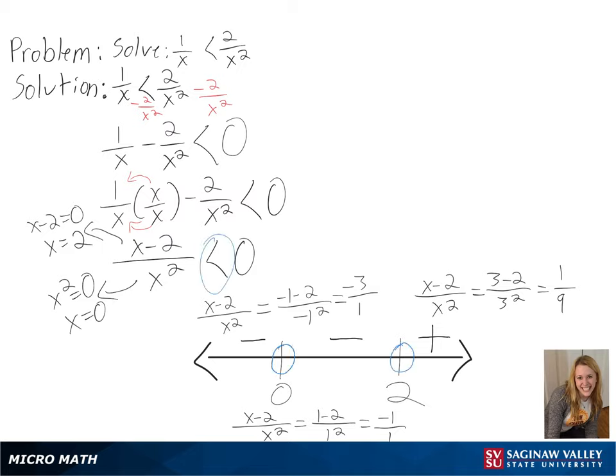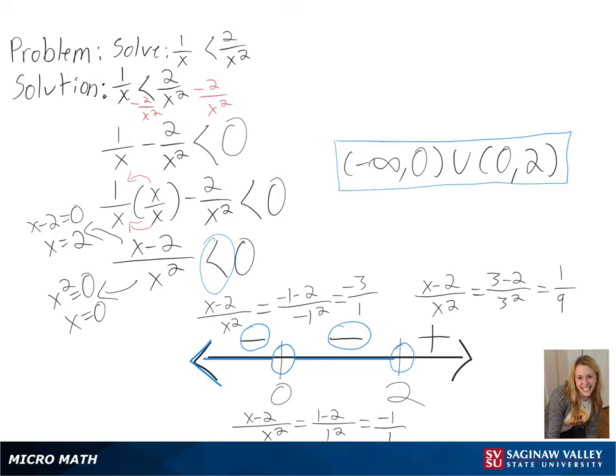For our solution, we need to find what is less than 0 but not equal to, so we will not include 0 and 2, but we will include our negative regions. So we will get negative infinity to 0 and 0 to 2 as our final answer.